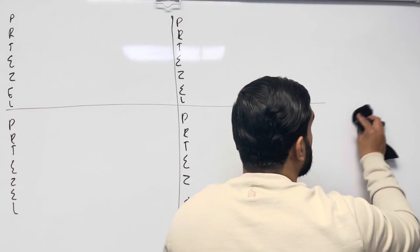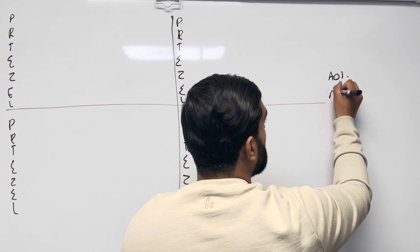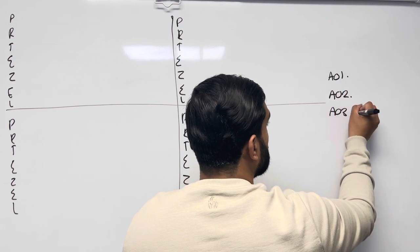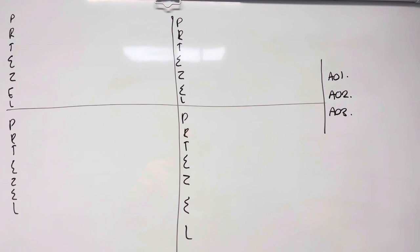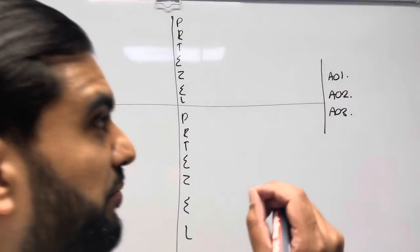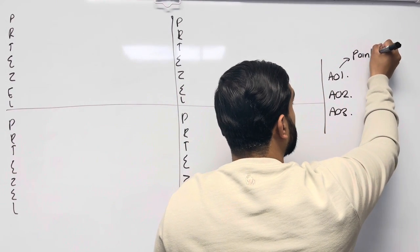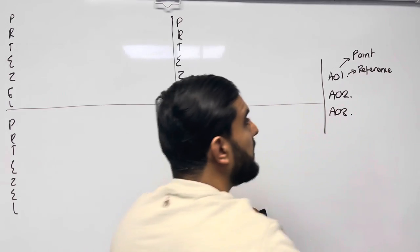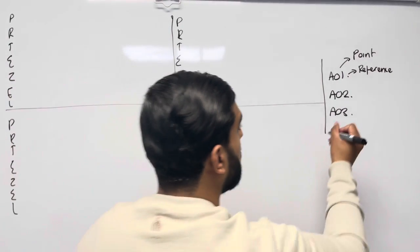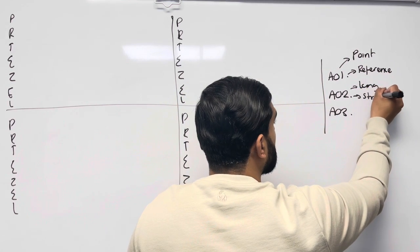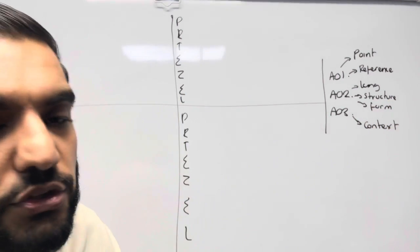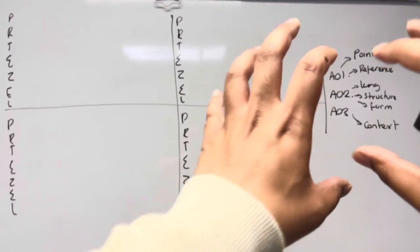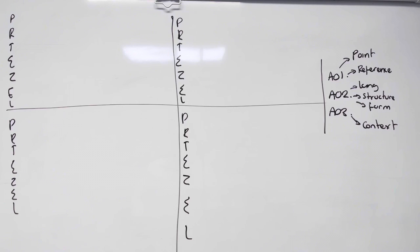In our paragraphs we have to address AO1, AO2, and AO3, otherwise our paragraphs are pointless. AO1 looks at point and reference. AO2 looks at the effect of language, the effect of structure, and the effect of form. AO3 looks at your links to context. All of that has to be spread across your paragraphs, and this is how I advise you to do your plan.